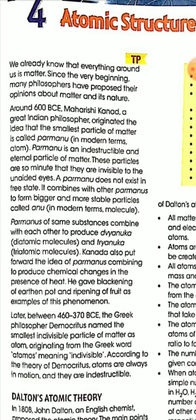Paramanus of the same substance combine with each other to produce di-anuka, that is a diatomic molecule. If a molecule contains three Paramanus, then it is called tri-anuka. Kanad also put forward the idea of Paramanus combining to produce chemical changes in the presence of heat, giving the blackening of an earthen pot and ripening of fruit as examples.